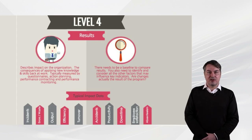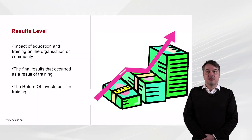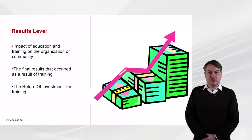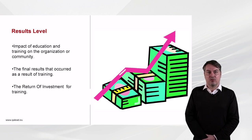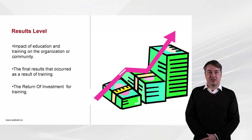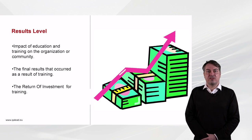Finally, the fourth level of the Kirkpatrick model looks at the ultimate results of the training for the organisation where the student works or is going to work. This level is closely related to the previous level, but looks specifically at how the change in behaviour of an individual impacts the organisation or community they are working in as a whole. Here you look at whether the final results that occurred are a result of the training itself or of something else. In a more corporate environment, you can also address this in terms of return on investment for the training.